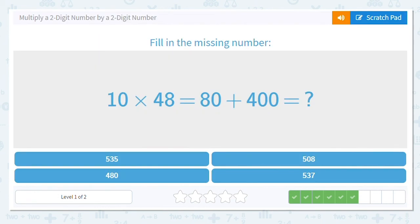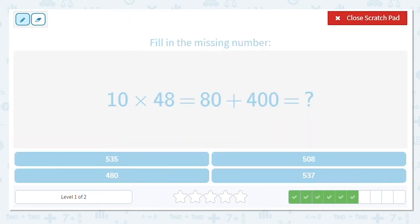Next one, we have 10 times 48, and we have our partial products of 80 and 400 already figured out for us. So all we need to do is add those partial products together. Is it okay if I flip it and I do it like this?